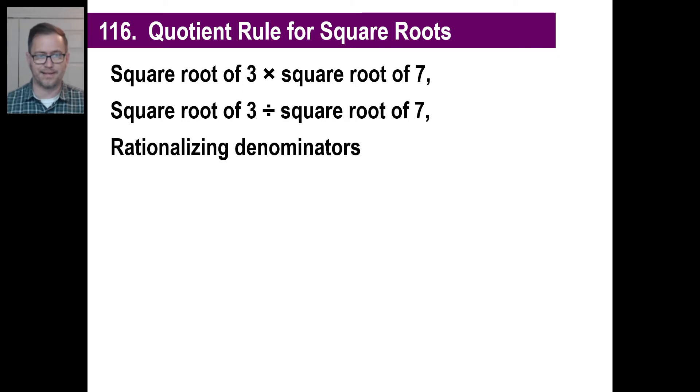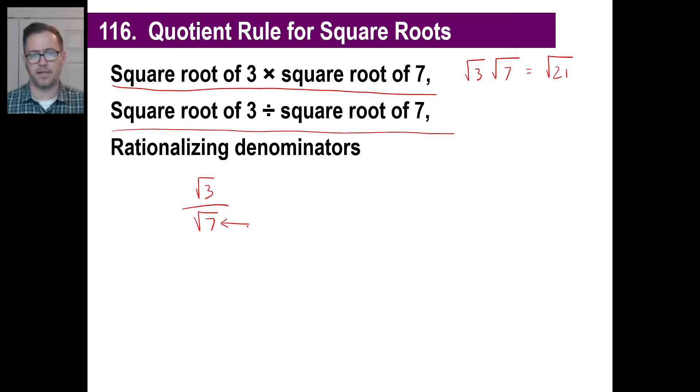We've done things like this already, where we've gone the square root of 3 times the square root of 7, and of course we know the answer is just the square root of 21. If we divide something with square roots, like the square root of 3 divided by the square root of 7, we can write it like that as well. But it's generally accepted to have an answer in algebra where you do not have an irrational number in the denominator.